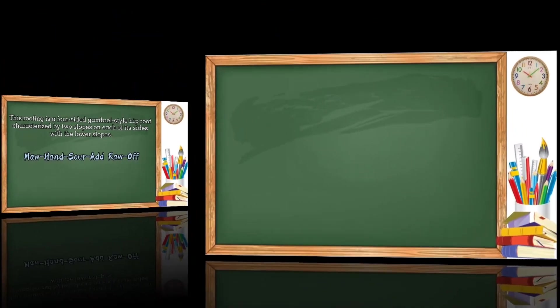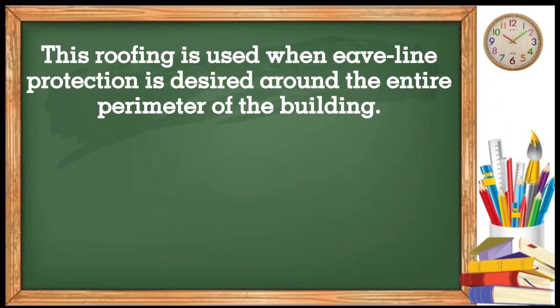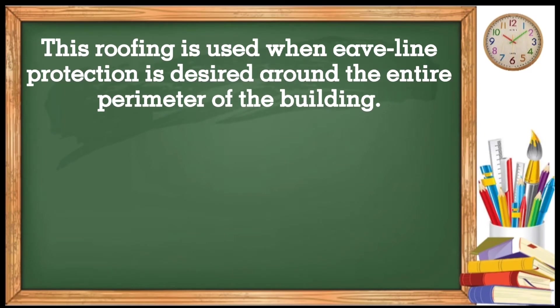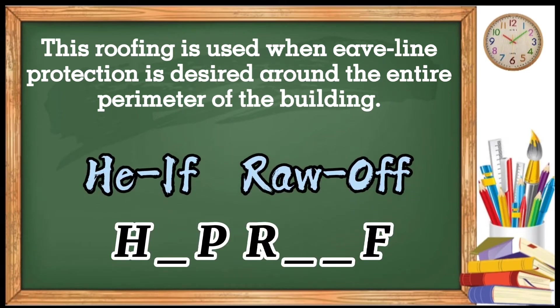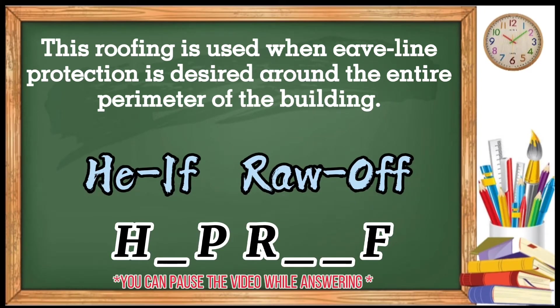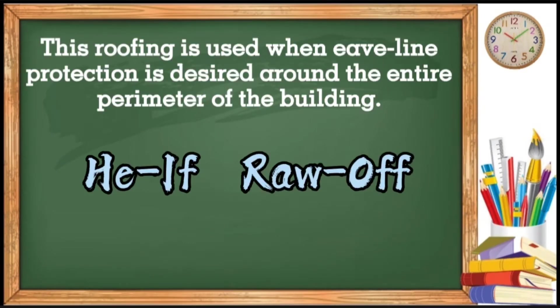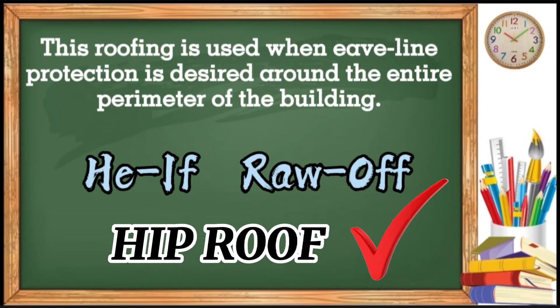Next, this roofing is used when eave-line protection is desired around the entire perimeter of the building. Here's the clue. He, if, row, off. He, if, row, off. What is the answer? Yes, it is a hip roof. Great!